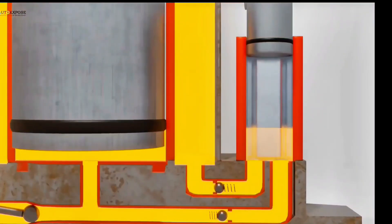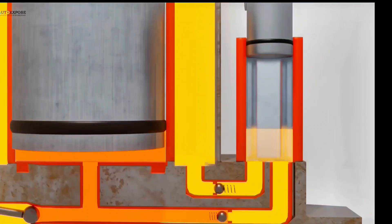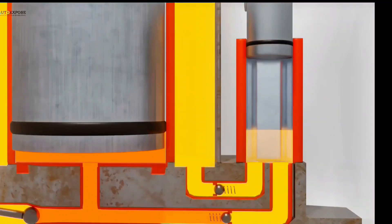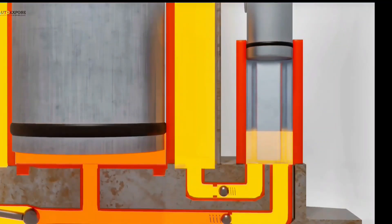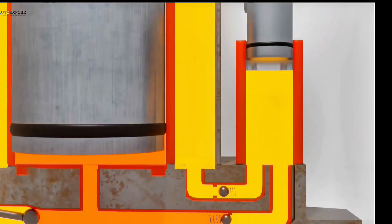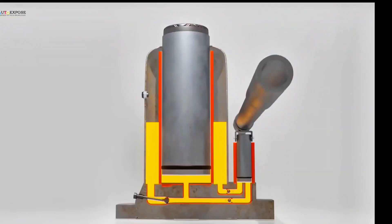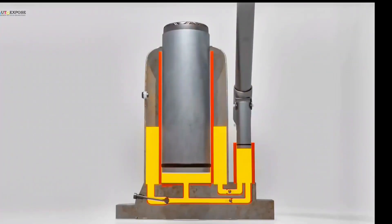When we raise the input piston again, it reduces the pressure inside the input cylinder, and the previous process is repeated. The reservoir valve opens due to suction, but the output valve closes. This draws fluid from the reservoir to fill the input cylinder. When the input piston is pumped, fluid flows into the output cylinder, causing the output piston to rise higher. This cycle continues until the output piston moves higher and higher.